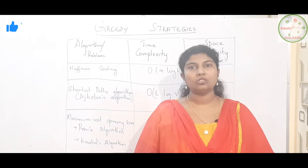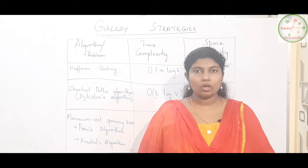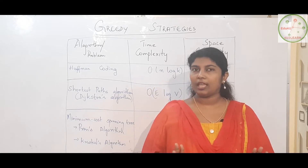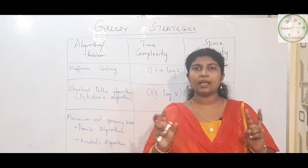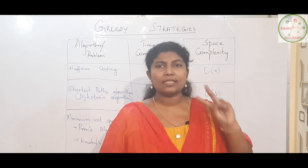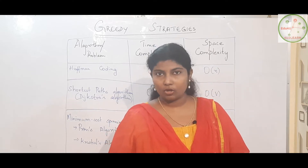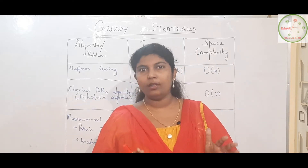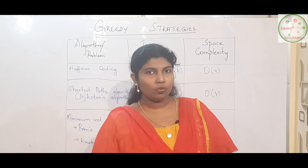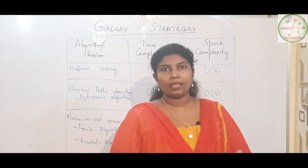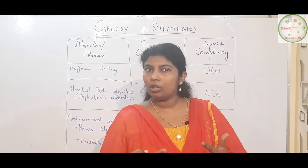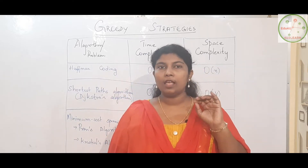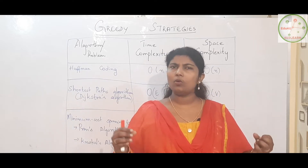In the greedy strategy, three things have to be considered. The first is feasibility — it ensures whether we are going to obtain the feasible or desirable solution. The second is optimality — whether the optimal solution is obtained among the available routes. The third is that once a path is determined, that solution or path cannot be reversed — it is irrevocable. So the three conditions in the greedy method are feasible, optimal, and irrevocable.